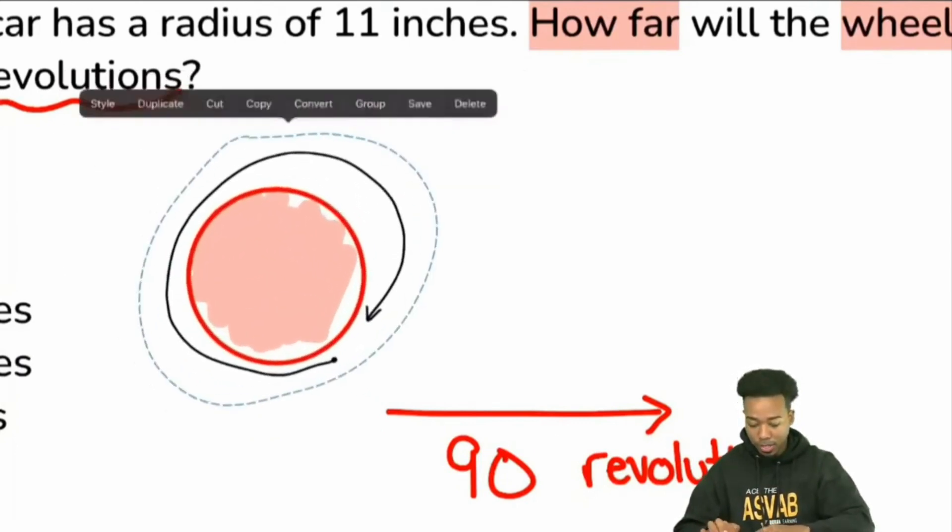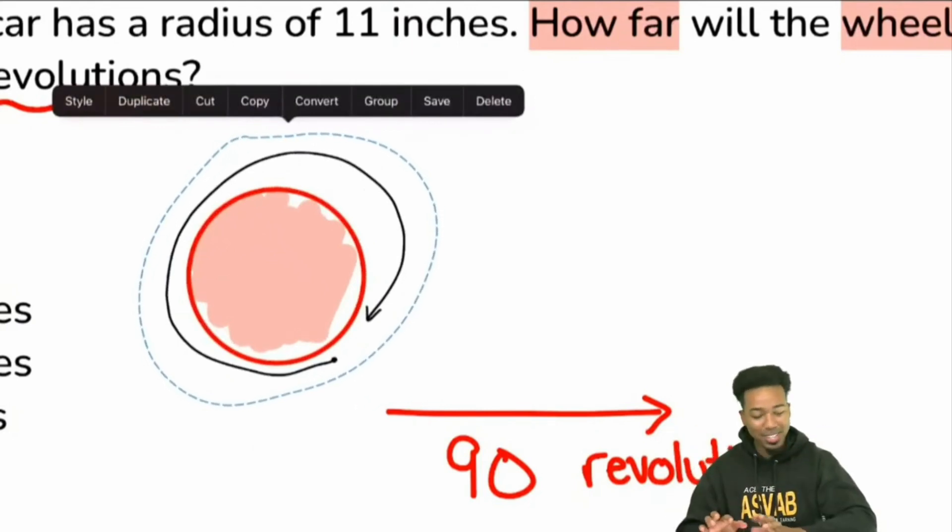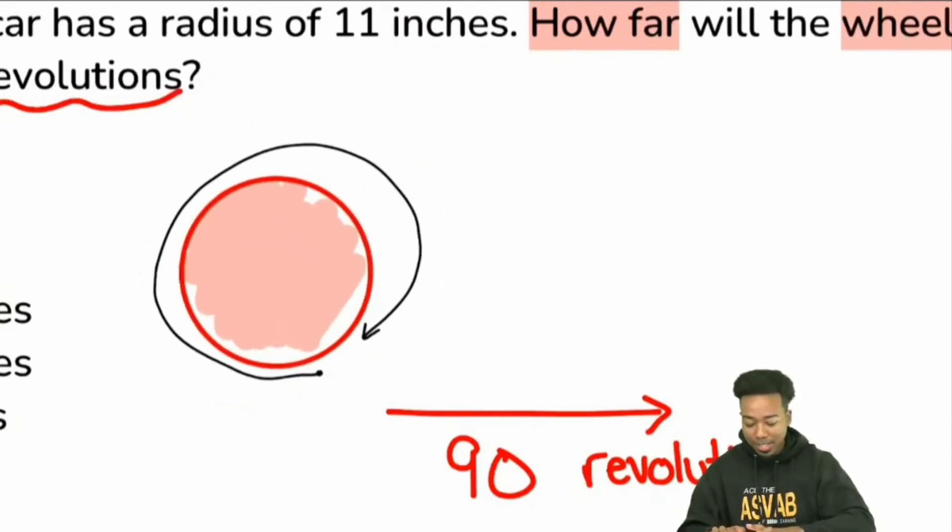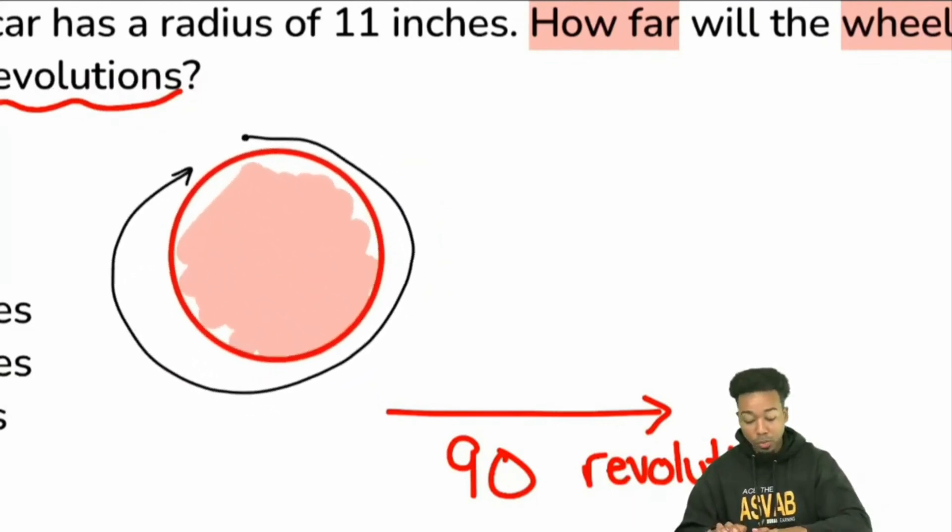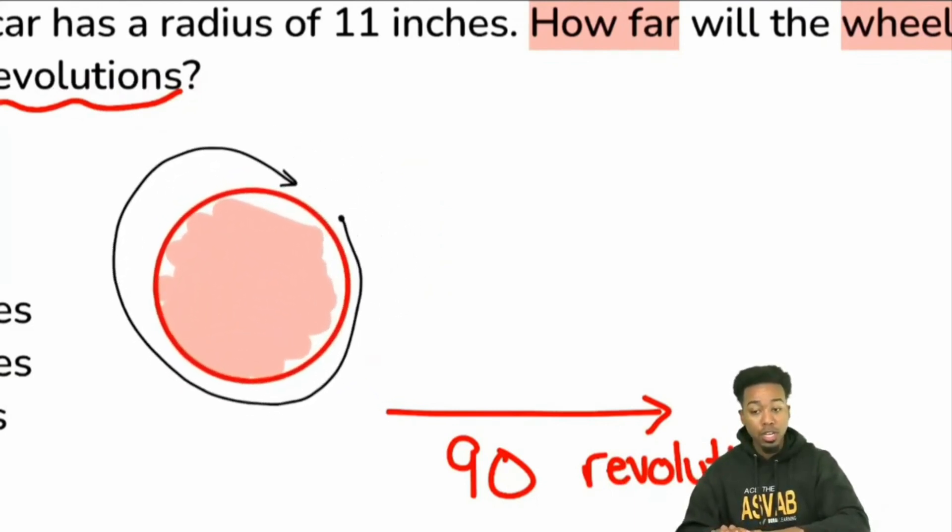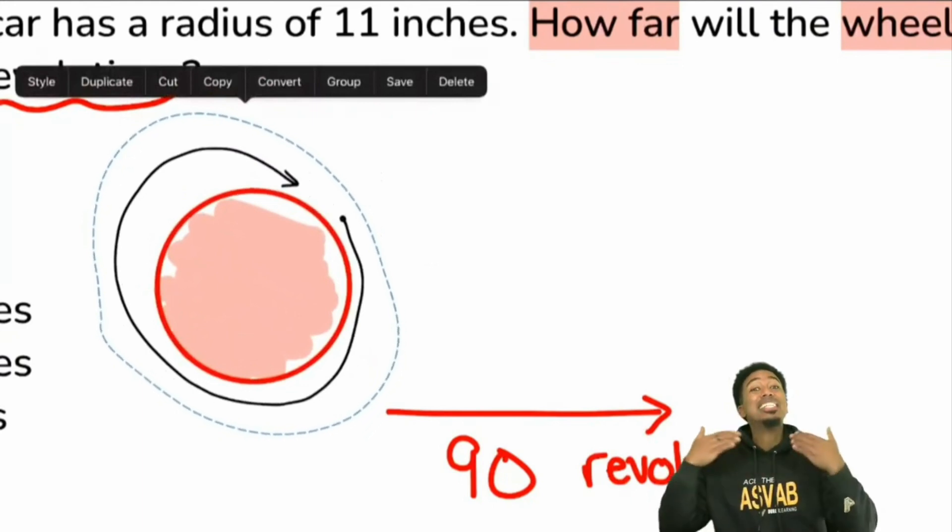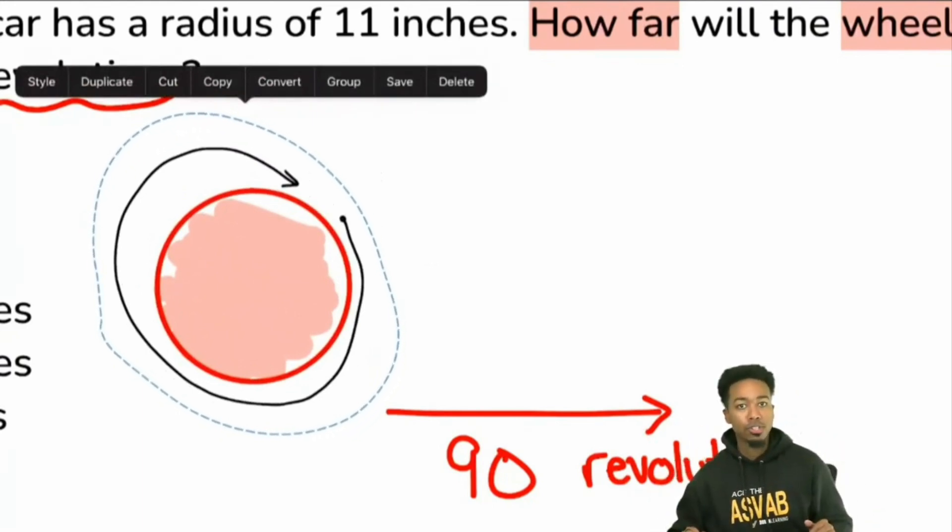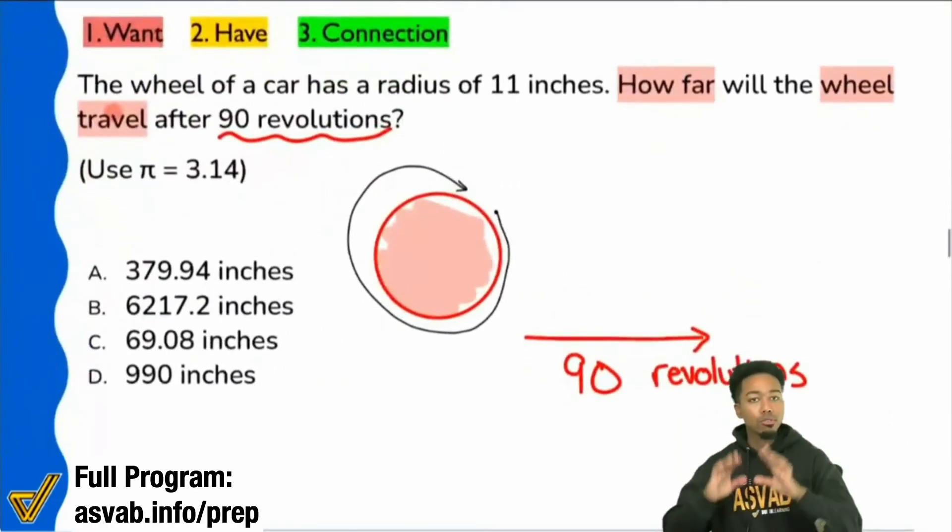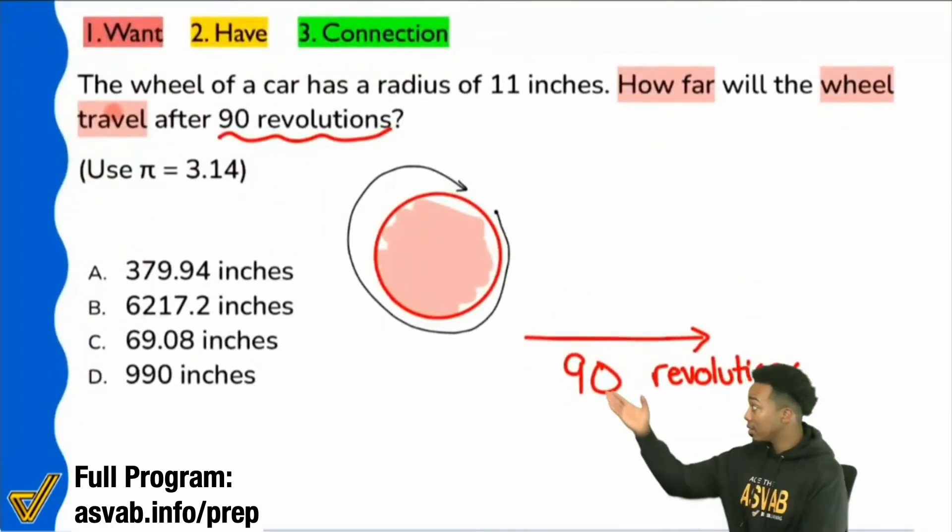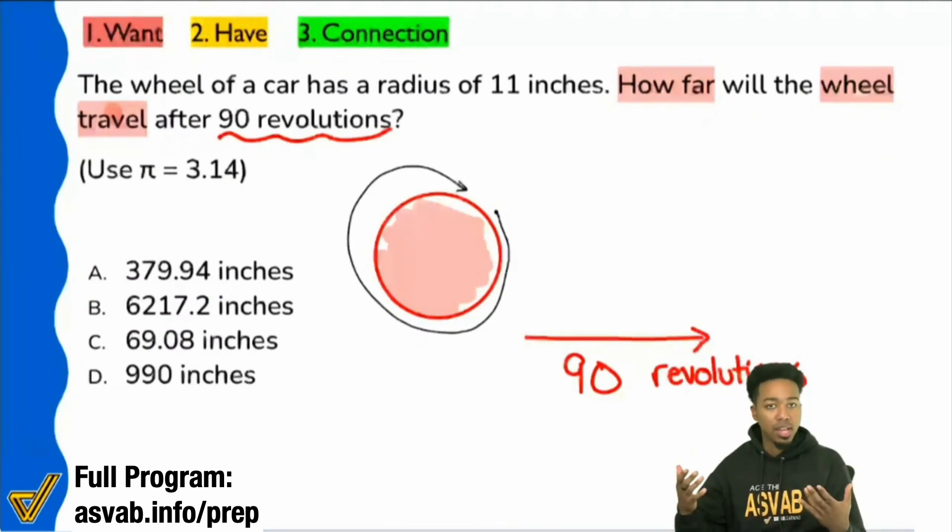Again, one revolution is one turn, one complete rotation here. So what we're asking for is, do you understand that one revolution is one complete turn of the circle? So what we're looking for is 90 complete turns of the circle or of the wheel. Is that making a little more sense before we continue? Cool. Because you don't need to understand circumference and all that to understand what a wheel turning feels like, right?